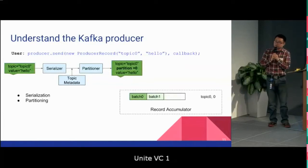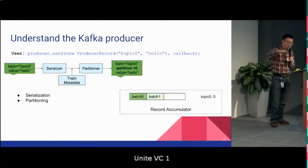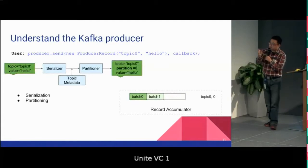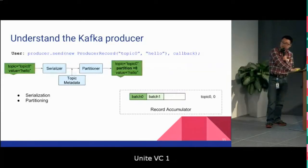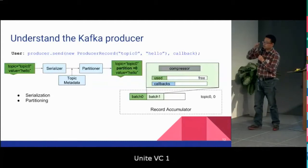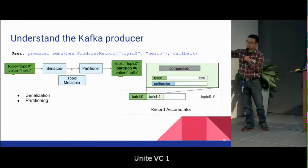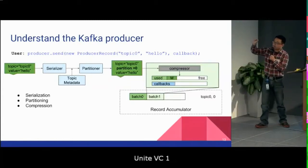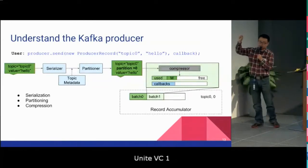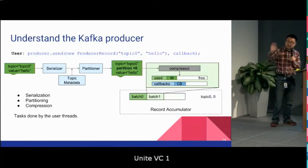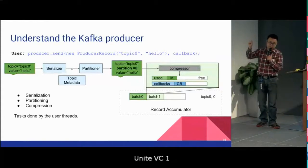Inside the producer there is a record accumulator which holds batch queues, each corresponding to a particular partition. We take the last (currently active) batch from the batch queue for topic zero partition zero. Inside the batch there is a compressor, a buffer, and a callback list. The user thread compresses the message and appends it to the end of the buffer, then adds its callback to the callback list. After this, the producer.send call returns and the user thread can do something else.